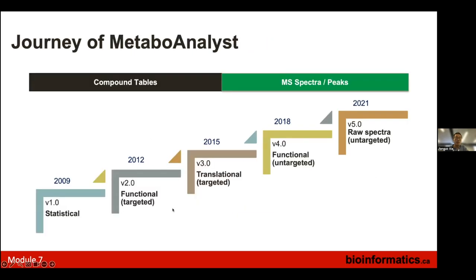MetaboAnalyst tries to balance both targeted and untargeted approaches. Version one was statistical analysis, and we continued enhancing through version five. Statistical analysis is method-neutral — it just needs a data table. Versions two and three focused on targeted analysis: understanding functions and biomarkers. Versions four and five are mainly untargeted. We want untargeted analysis to be done in a coherent framework, and we are currently working on MS2 annotation.